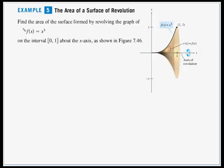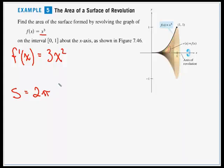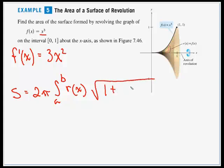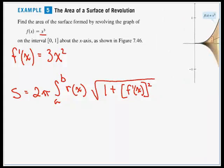First, we need our derivative: f′(x) = 3x². The surface area formula is S = 2π times the integral from a to b of r(x) times the square root of 1 plus f′(x) quantity squared, dx.